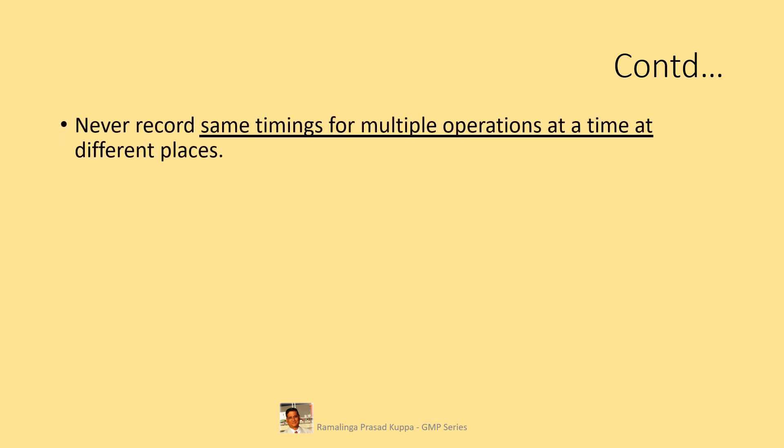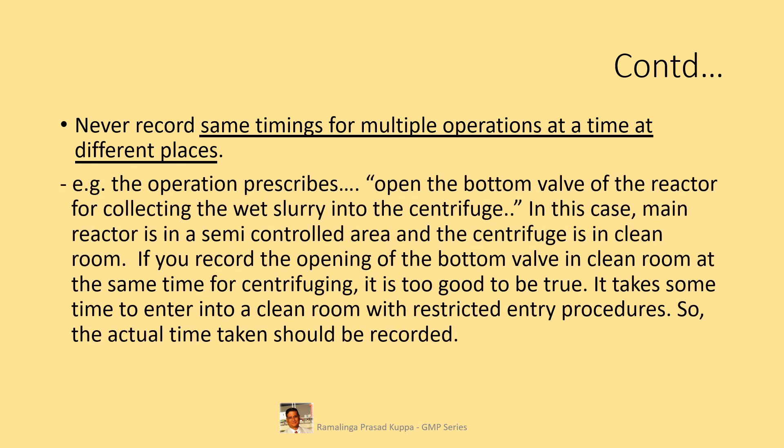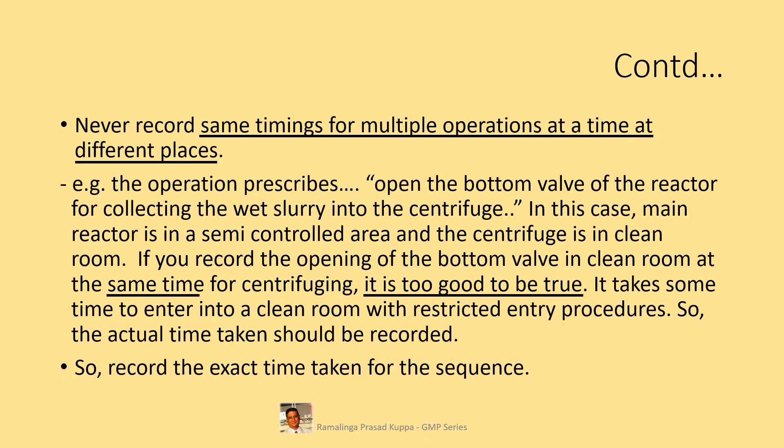Never record the same timing for multiple operations at different places. For example, if the operation prescribes opening the bottom valve of the reactor to collect wet slurry into the centrifuge, and the main reactor is in a semi-controlled area while the centrifuge is in a clean room — recording the opening of the bottom valve and the centrifuging at the same time is too good to be true. It takes some time to enter the clean room following restricted entry procedures, so the actual time taken should be recorded, accounting for all timings from exit from the semi-controlled area into the classified area.